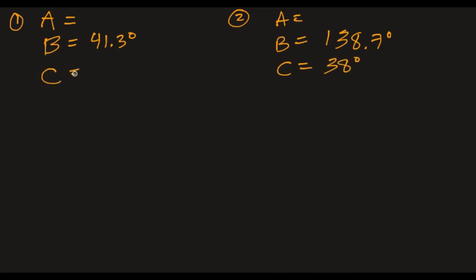Okay, so let's just get a new screen. So, so far we have two cases. In one case, angle B is 41.3. In the second case, angle B is 138.7. C was given as 38 degrees. And A is what's left over. I'll calculate that in a minute. So here's our two possibilities.